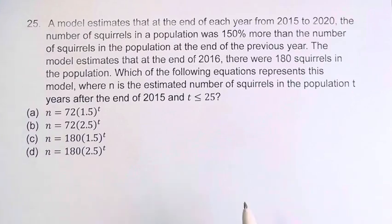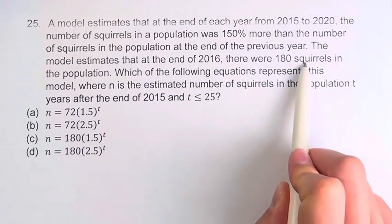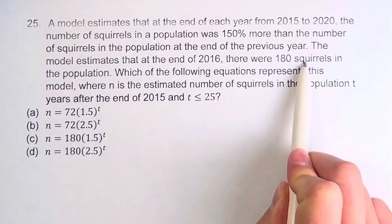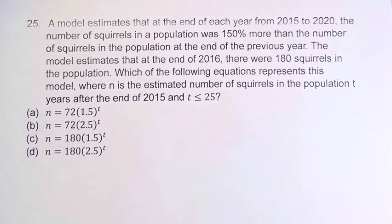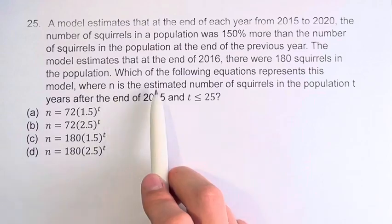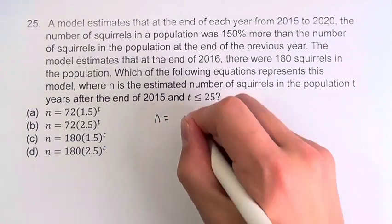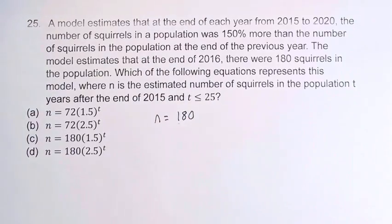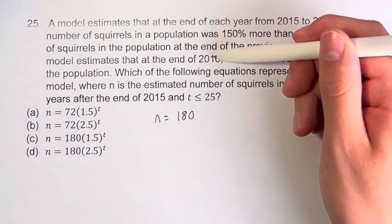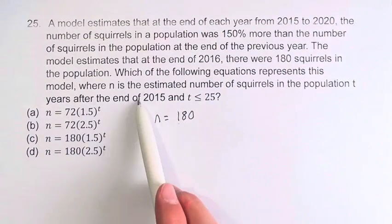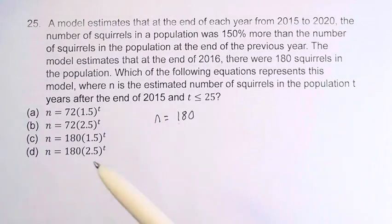So we're given that at the end of 2016, there were 180 squirrels in the population. What does that actually mean for our variables n and t? n is the estimated number of squirrels in the population, so that's 180. So n is equal to 180, and this is at the end of 2016, which is one year after the end of 2015, so therefore t is equal to 1.